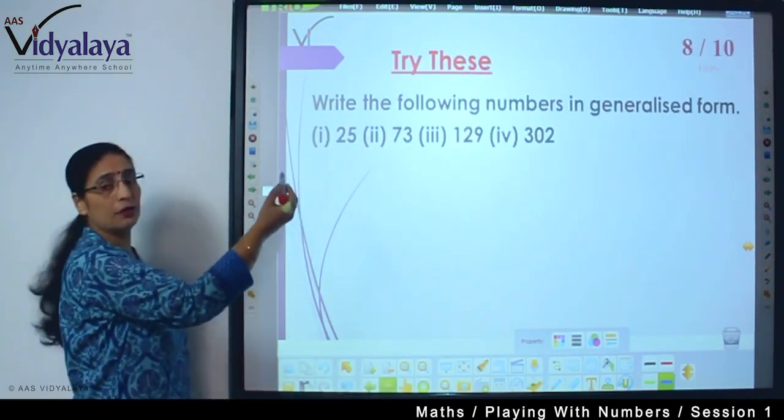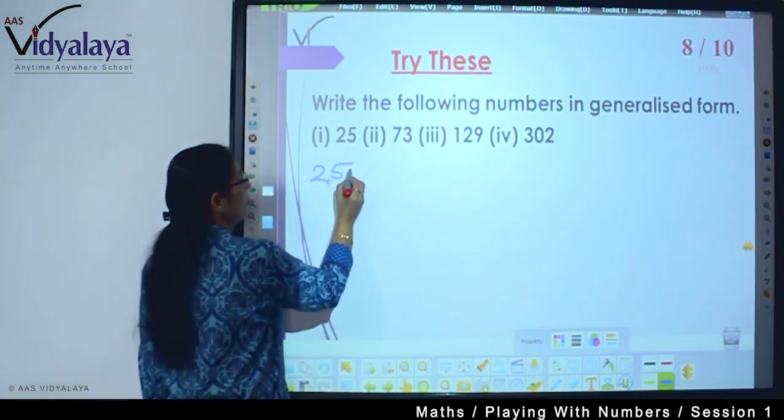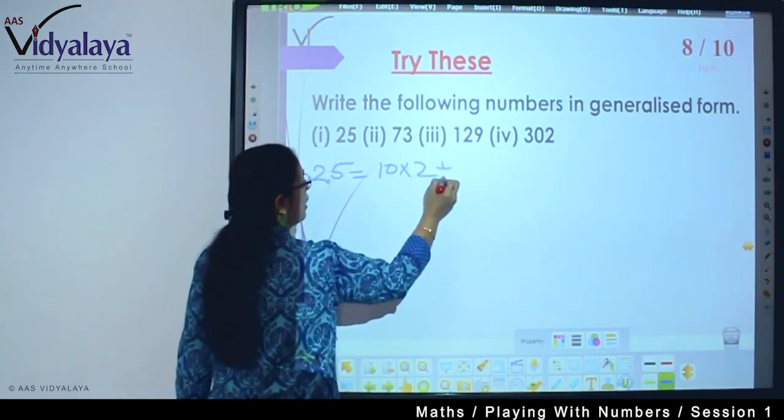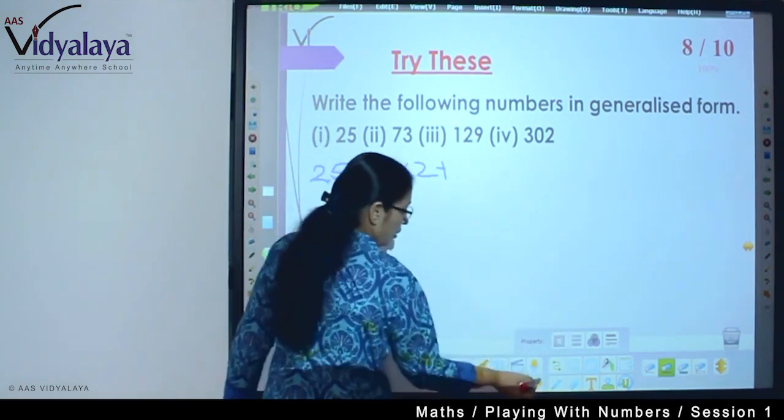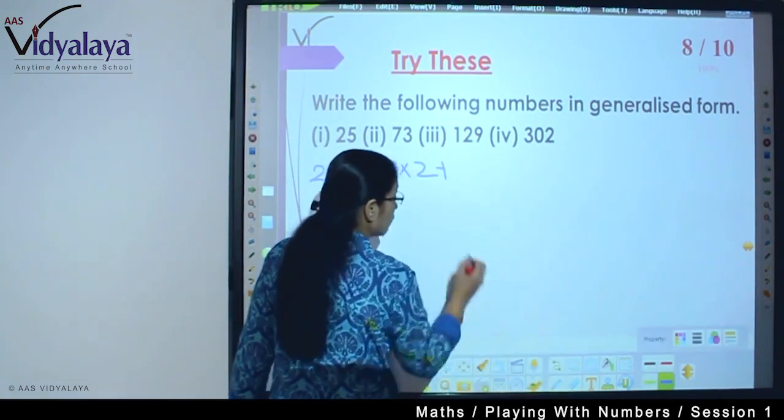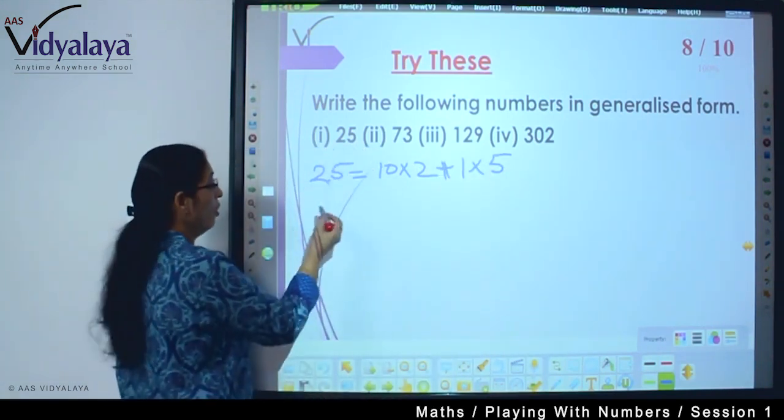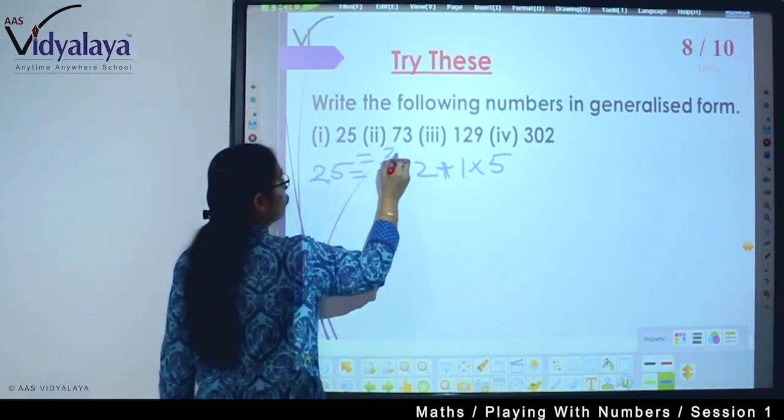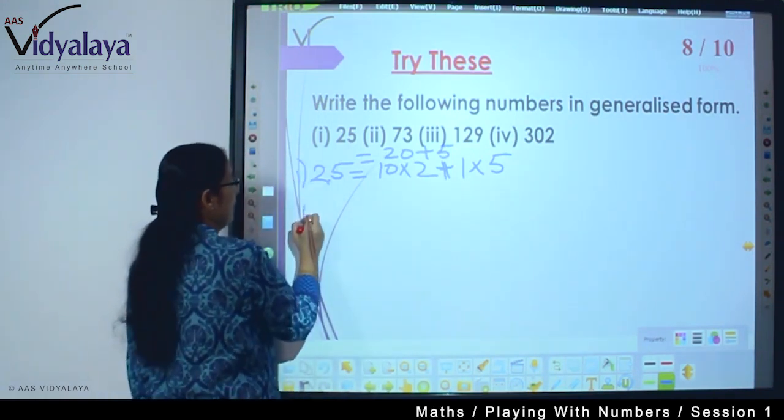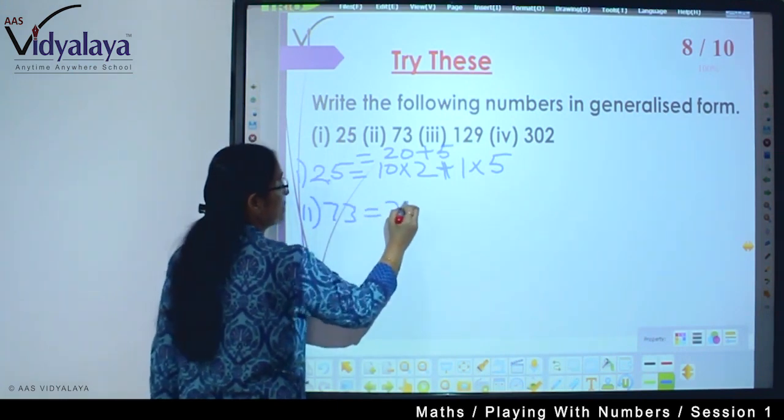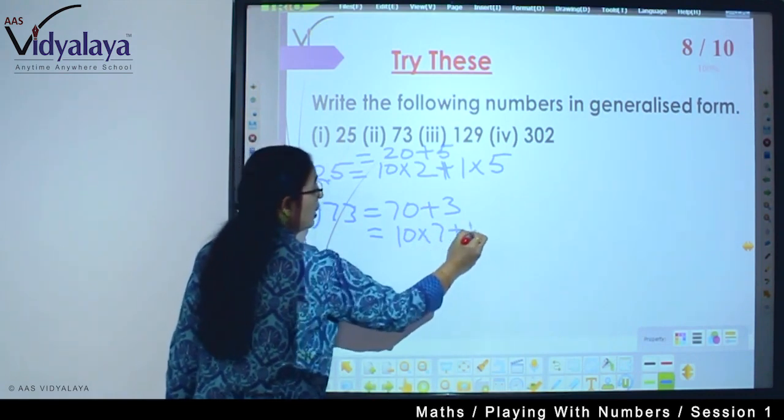So now try these sums: write the following numbers in generalized form. So twenty five can you write? Ten into 2 plus 5, or should we write one into 5? So that you know this is one's place value, one into 5. Second, let's see 73. It can be written as 70 plus 3, this means 10 into 7 plus 1 into 3.